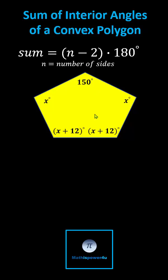Can you find the measure of the missing interior angles of the given pentagon? Because the sum of the interior angles of any convex polygon is the quantity n minus two times 180 degrees, where n is the number of sides, we can set up and solve an equation for x and then determine the missing interior angles.